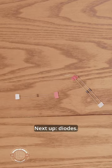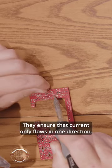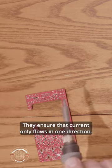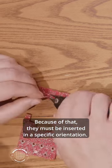Next step, diodes. These are like the crossing guards of electronic components. They ensure that current only flows in one direction. Because of that, they must be inserted in a specific orientation.